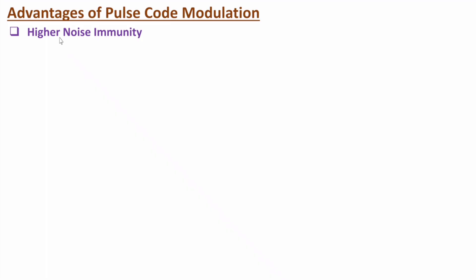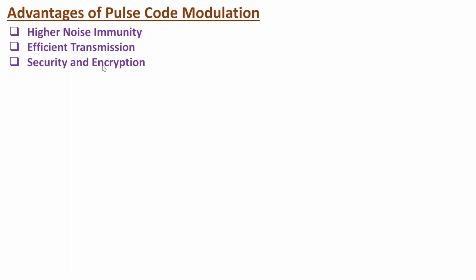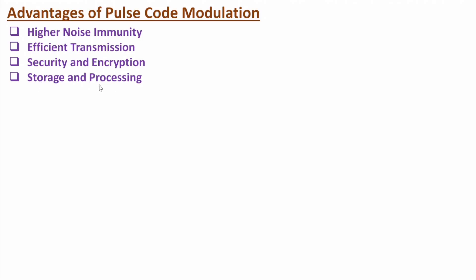Advantages of PCM: it provides higher noise immunity, since PCM converts analog signals to digital. Digital signals offer efficient transmission, security and encryption (encryption is not possible with analog signals), and digital signals can be stored and processed. PCM also enables multiplexing techniques such as CDMA (Code Division Multiple Access) and TDMA (Time Division Multiple Access), allowing many users to share the channel.